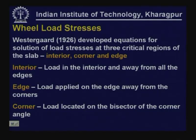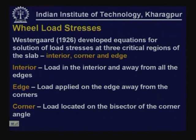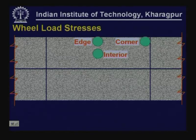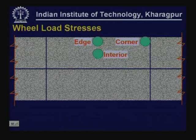The load placed in the interior must be sufficiently away from all the edges — that is the definition of an interior region. Edge loading is a situation where the load is placed along the edge away from the corners. Corner loading condition is defined by the load being located on the bisector of the corner angle. This diagram depicts the three critical regions: edge, corner, and interior region.